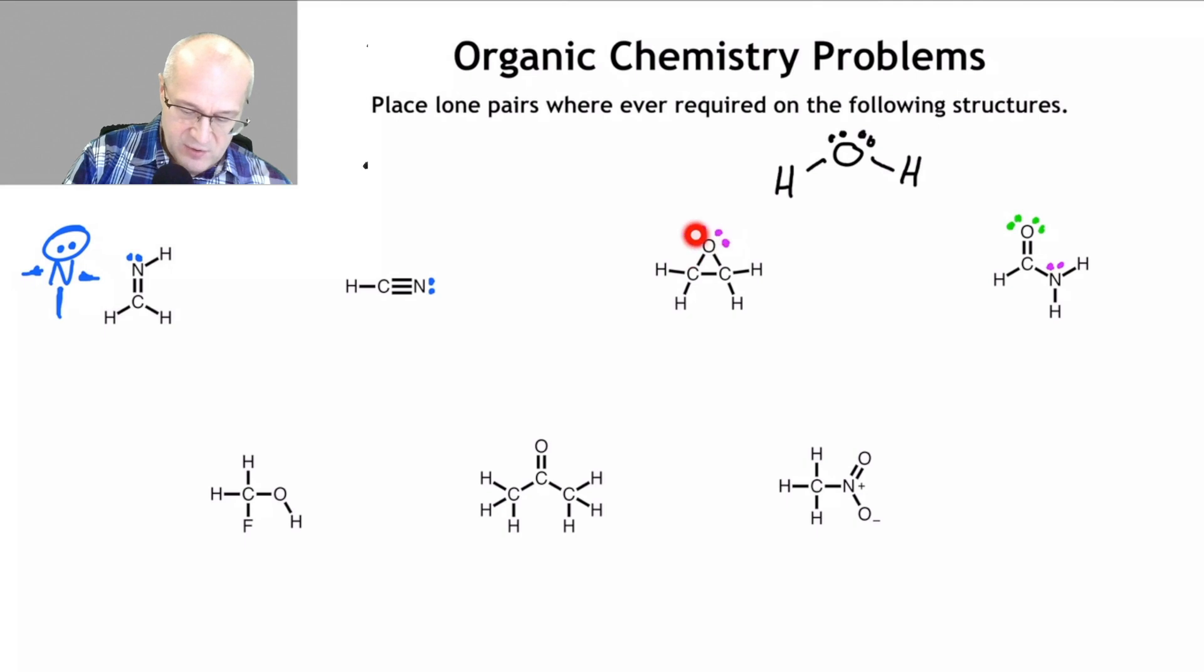Notice oxygen here had two lone pairs. Oxygen here has two lone pairs. Oxygen here has two lone pairs. Nitrogen has one. Nitrogen has one. Nitrogen has one. Starting to see a pattern here.